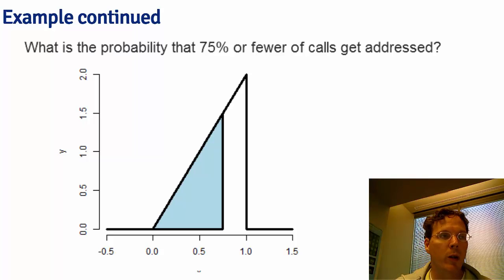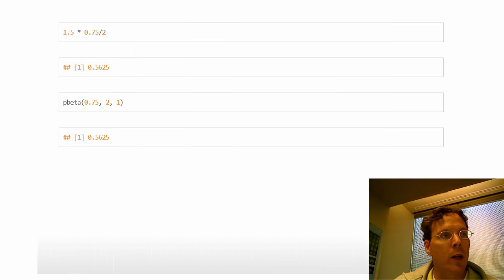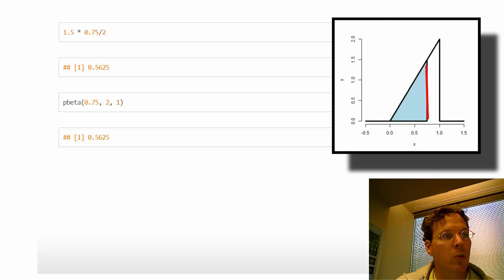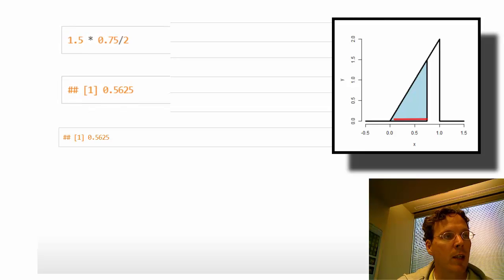Let's work through an example: what's the probability that 75% or fewer calls get addressed in a randomly sampled day? This is just another right triangle. The height at x = 0.75 is 1.5, since f(x) = 2x. The base is 0.75. So one-half times 0.75 times 1.5 works out to 56%.